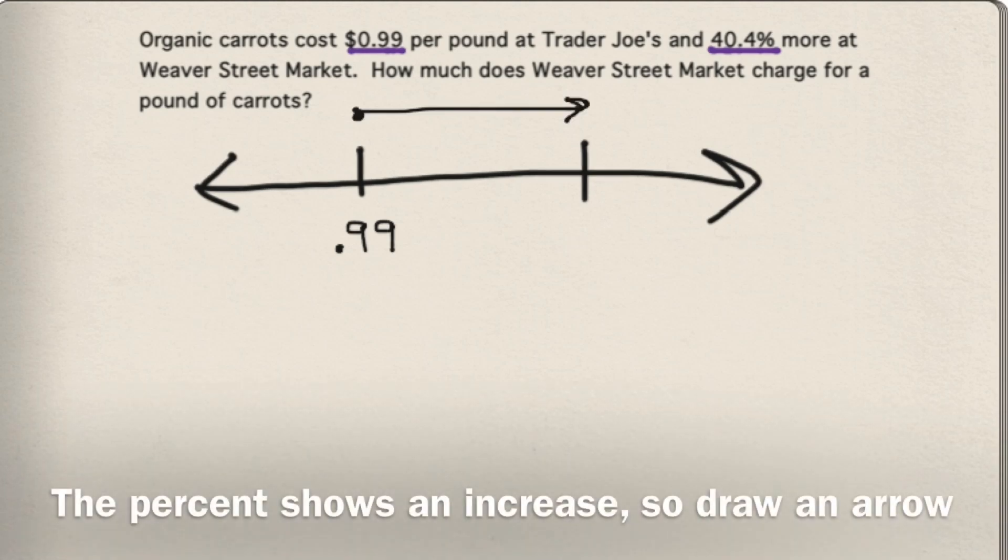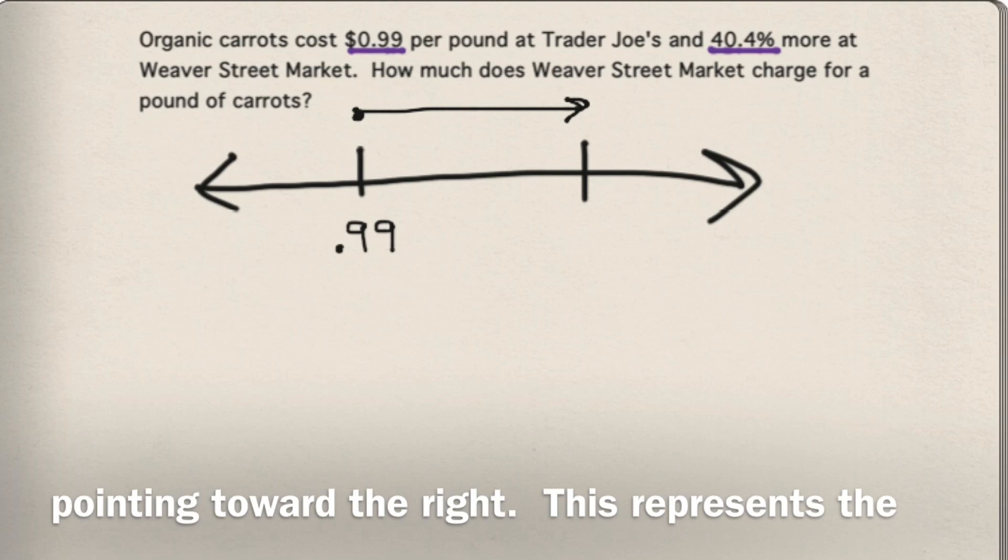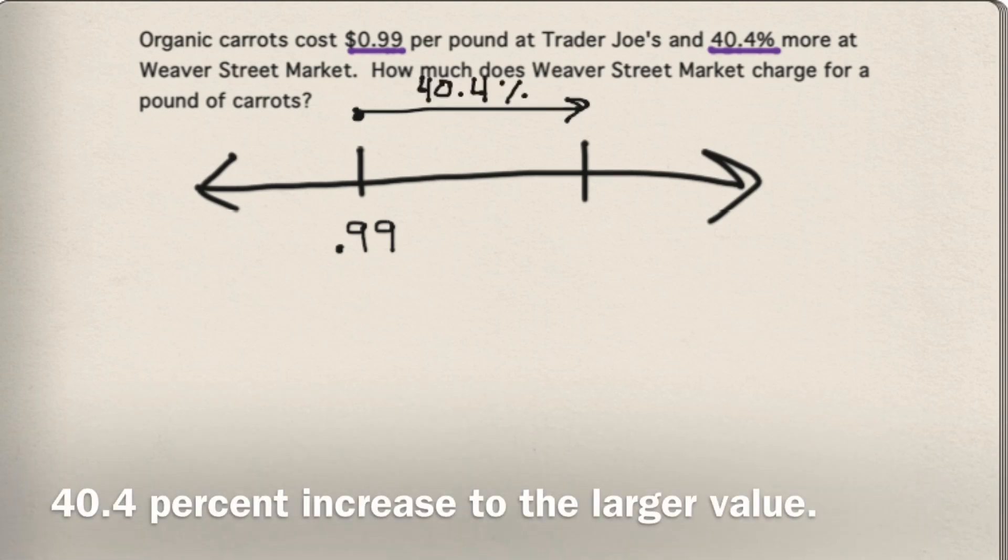The percent shows an increase, so draw an arrow pointing toward the right. This represents the 40.4% increase to the larger value.